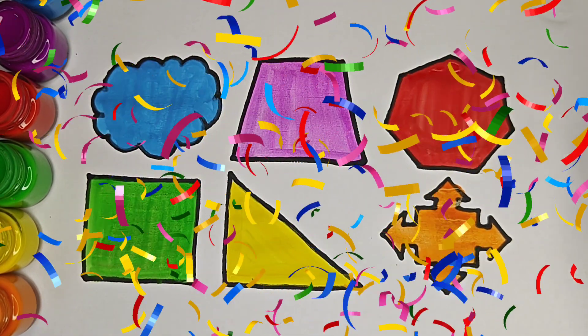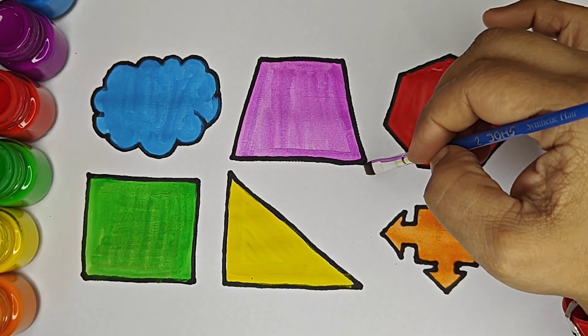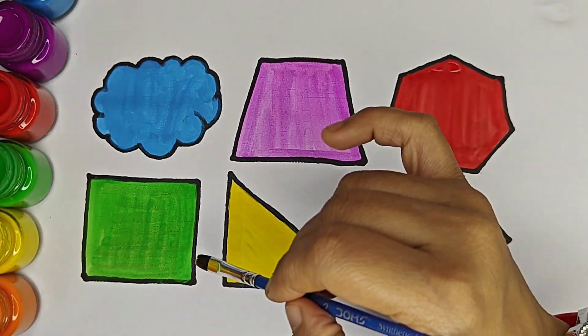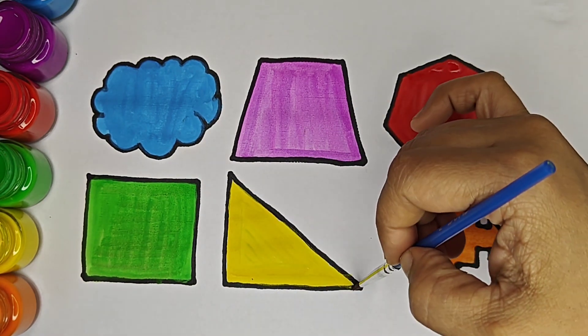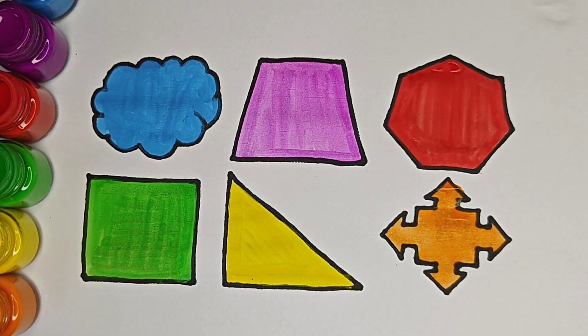Let us recall the shape's name and color name once again. This is cloud, blue color. Trapezoid, purple color. Heptagon, red color. Square, green color. Right-angle triangle, yellow color. Quad arrow callout, orange color.